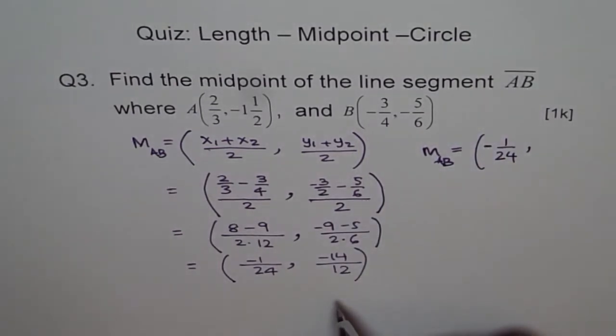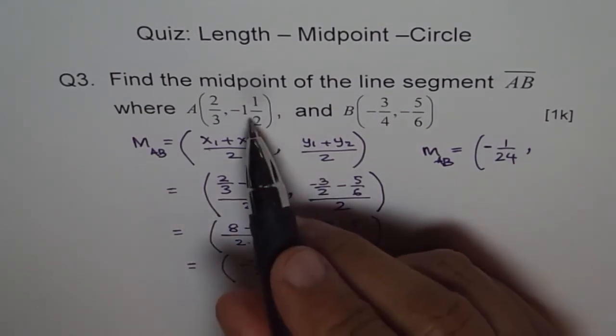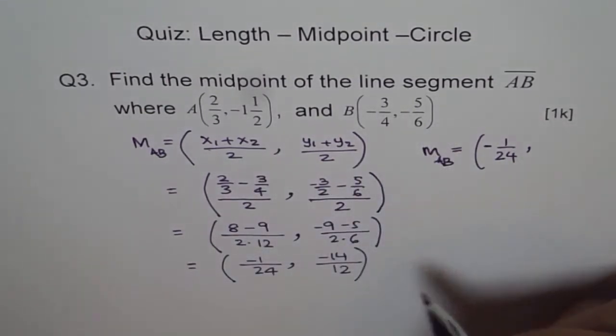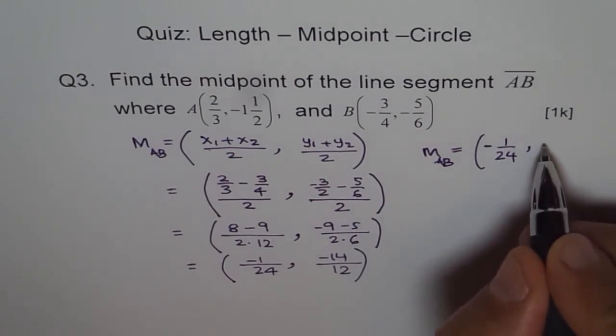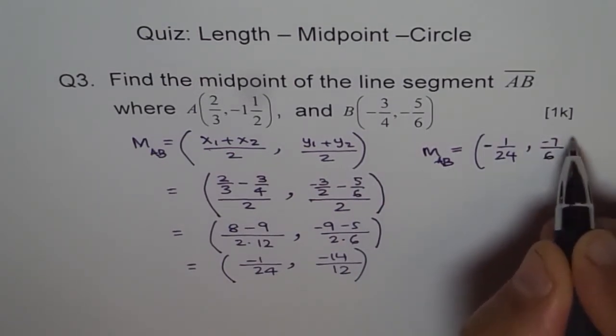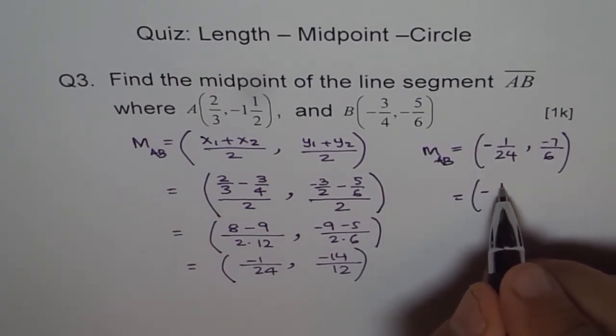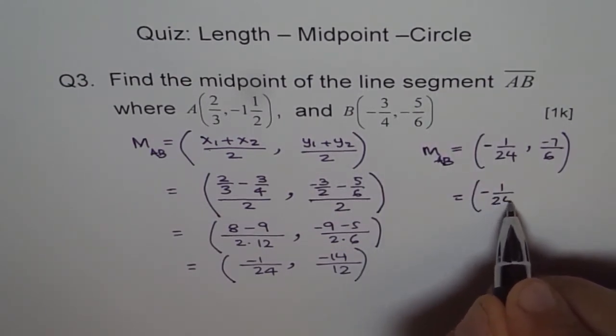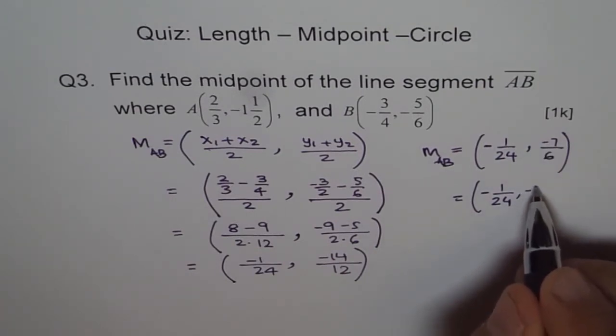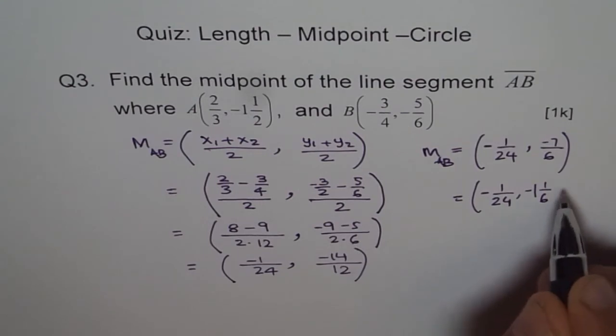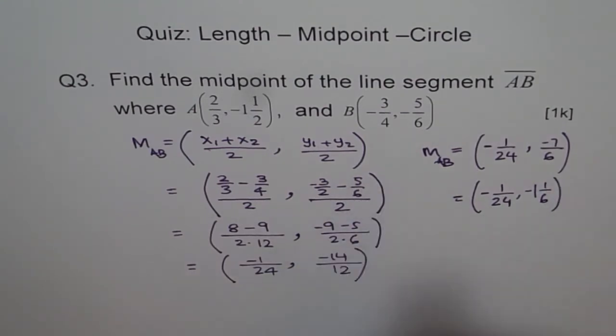So if you want, you can write like this also, or minus 7/6 is fairly good. Let me write minus 7/6. And let's write in that form also, that is mixed fraction. So 1 whole, minus 1, and then you are left with 1 over 6. That's the midpoint of our line segment. I hope you get it. Thank you.